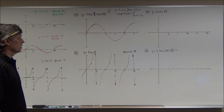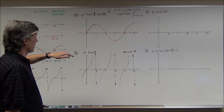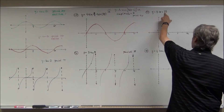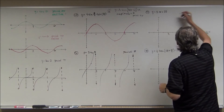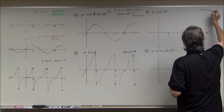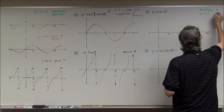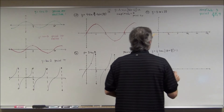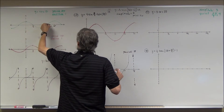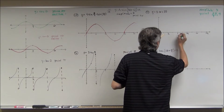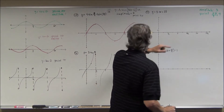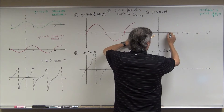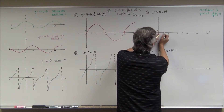Problem 47 is a cosine — I grab the green one. There's no translation, but the period is affected by this 2 and the amplitude is affected by this 3. Because of the 3, my amplitude is 3. The period is going to be 2π (the original parent function period) divided by B = 2, so that equals π. I have to complete a full cycle within π — starting at (0, 3) and returning to (π, 3).